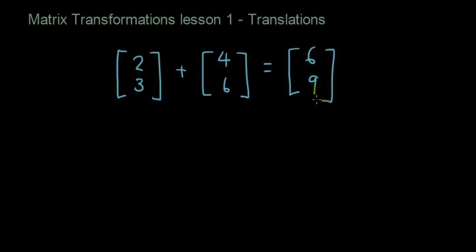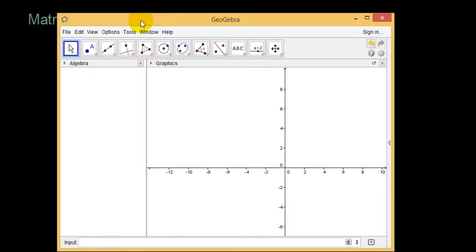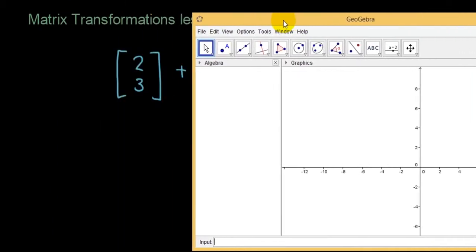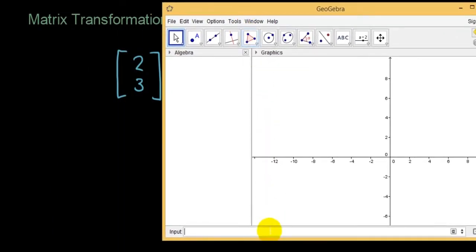So what does this matrix addition actually mean? Well I'm going to show you guys using GeoGebra. So in GeoGebra I'm going to draw my first matrix as a point. So the point is 2, 3 so let me just type that in. So bracket 2 comma 3. And as you can see the point is over here.